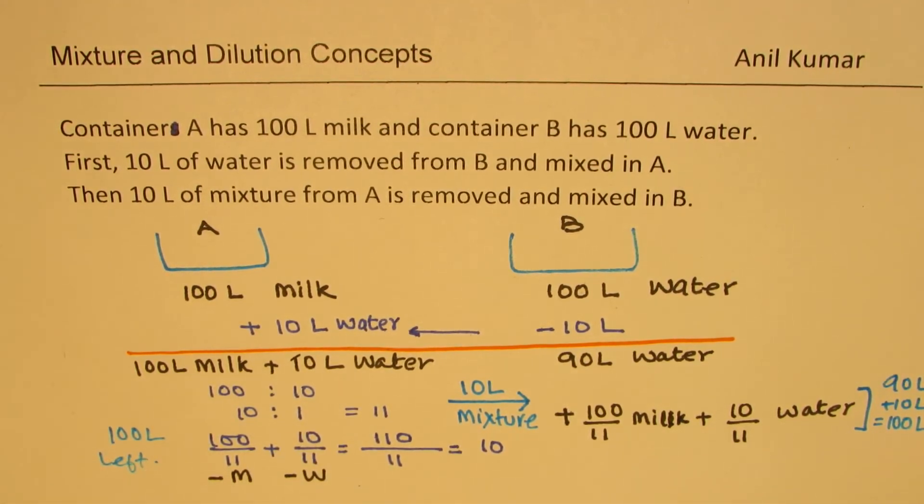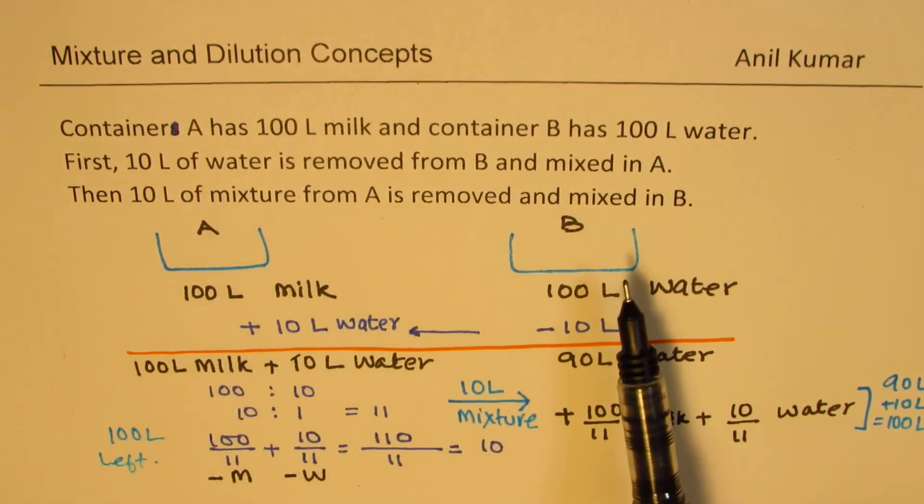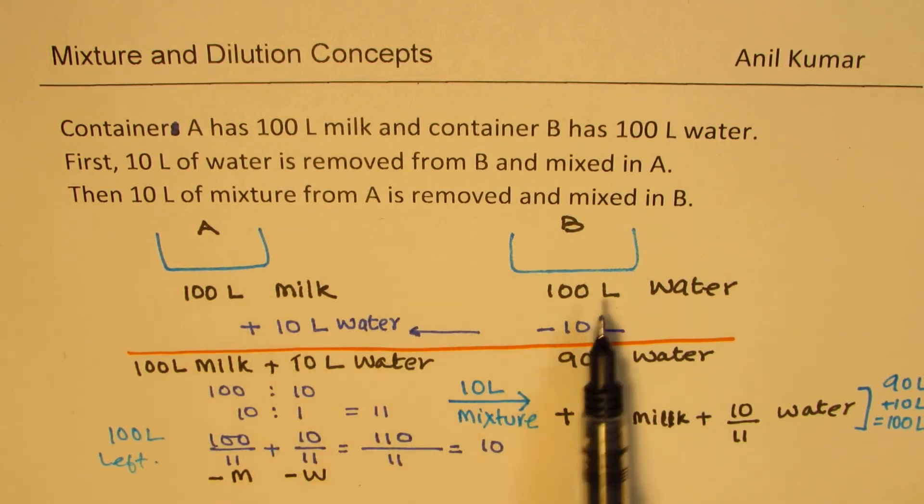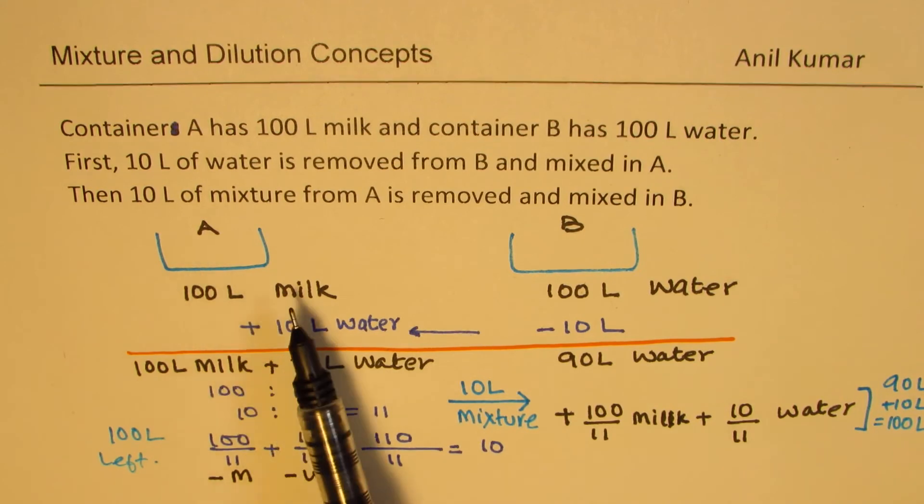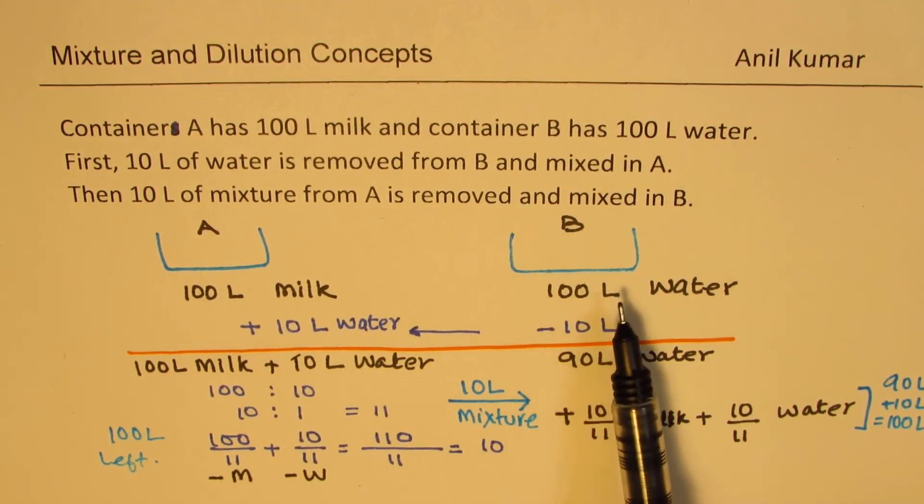So in both the cases what you notice is that finally since we added 10 litres and removed 10 litres, both containers have 100 litres of mixtures now. Now the question really is do we have more water in milk or do we have more milk in water? That is what we have to figure out.